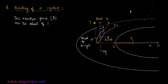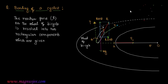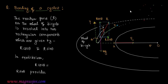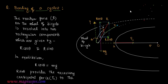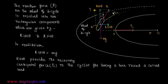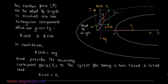The reaction force R on the wheels of the bicycle is resolved into two rectangular components given by R cos theta and R sin theta. In equilibrium, R cos theta balances the weight, and R sin theta provides the necessary centripetal force Fc to the bicycle for taking a turn around the rough curved road. Therefore R sin theta is equal to Fc.